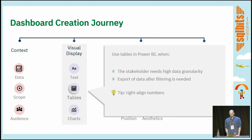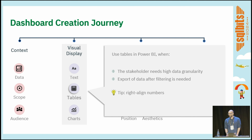So, tables. It's unfortunate — we have such a sophisticated data visualization tool, but we're still using tables. According to my experience, two reasons are behind that: the client or end user wants very high data granularity, or they want to filter, export to Excel, and play around with the data. Practically speaking, that's most probably the case. Whenever we have tables with numbers, we should always right-align them.